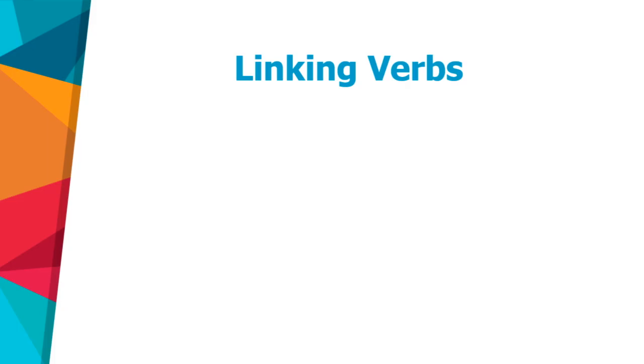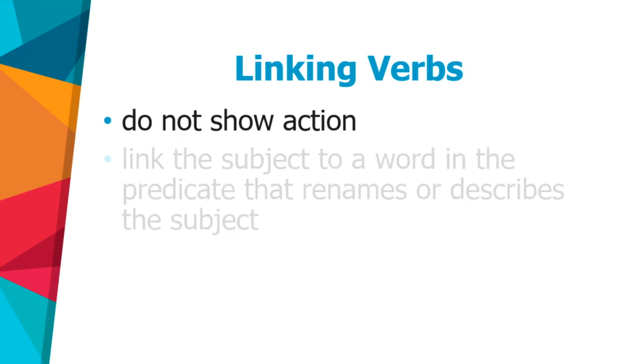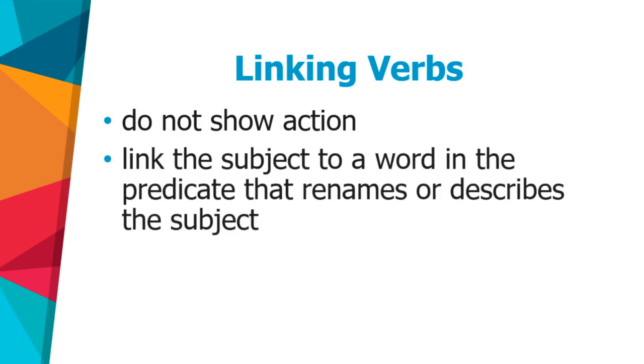So let's look at what makes a linking verb. Linking verbs do not show action. They link the subject to a word in the predicate that renames or describes the subject. So the linking verb acts a lot like an equal sign — the subject equals what we call the predicate noun or the predicate adjective.